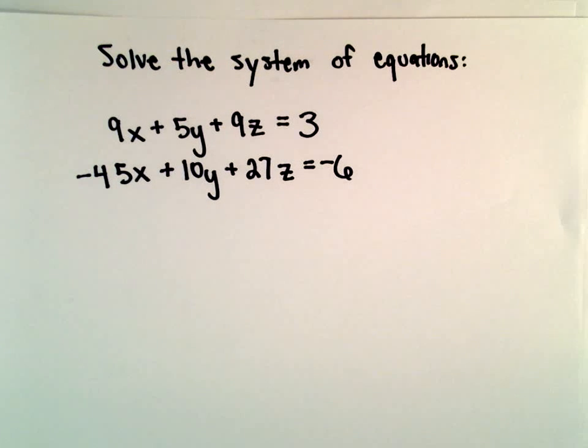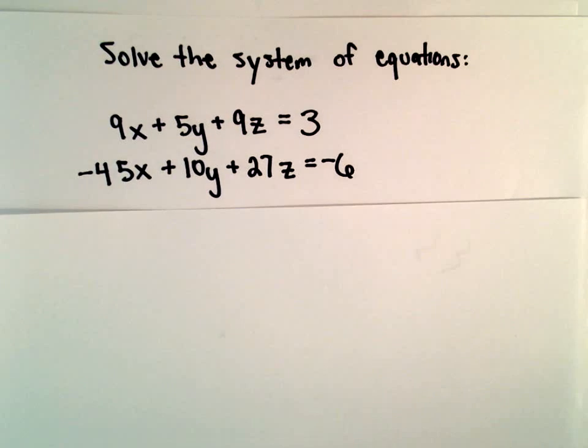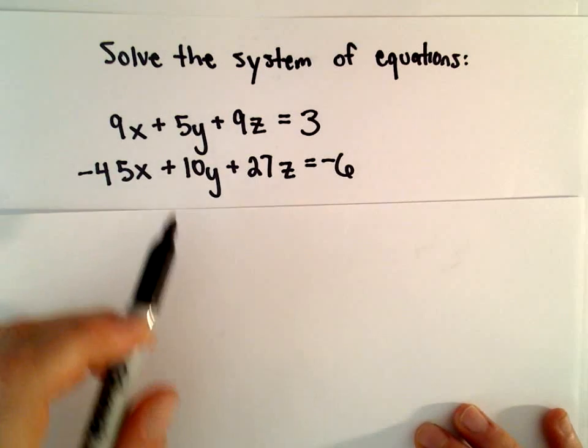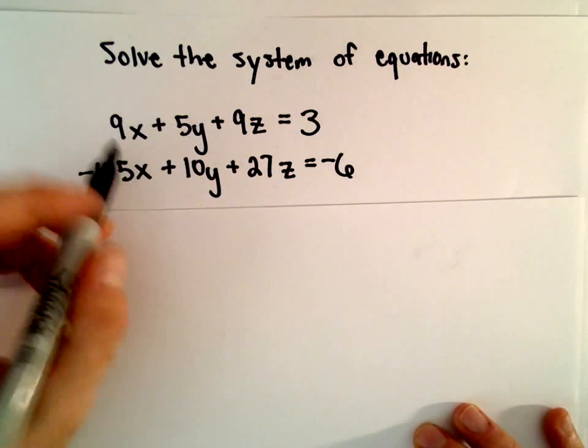For this type of system, there's not going to be a unique solution. We're going to get infinitely many solutions in this case. What I'm going to do is create a new equation where the terms involving y are missing.